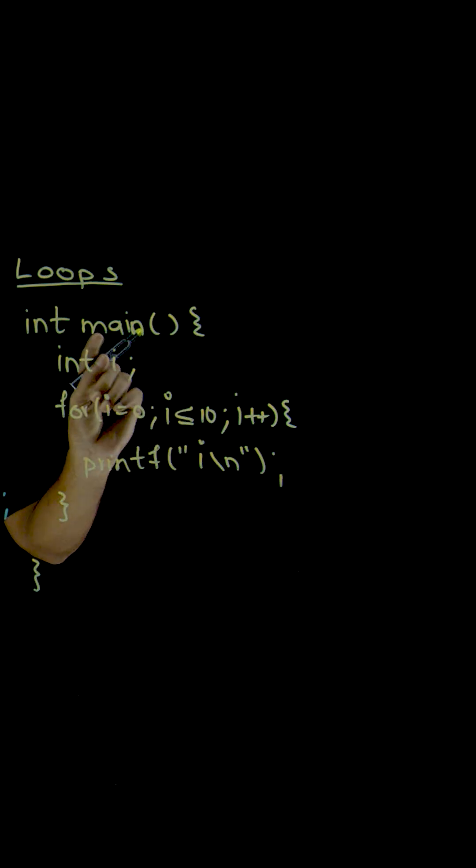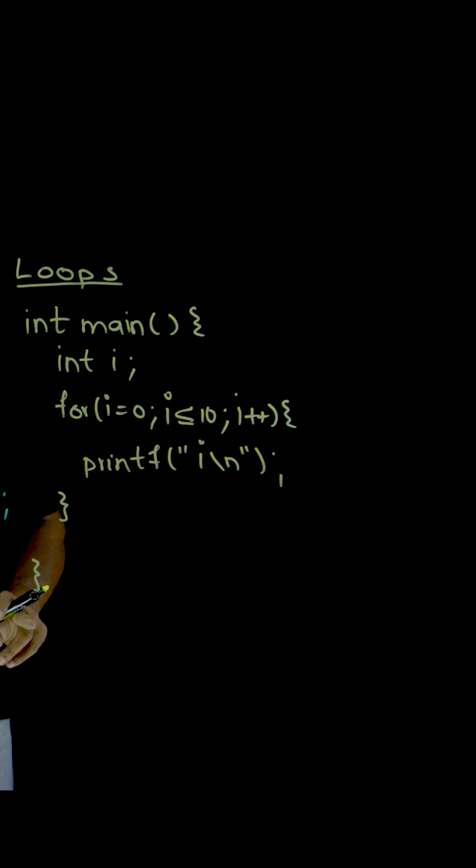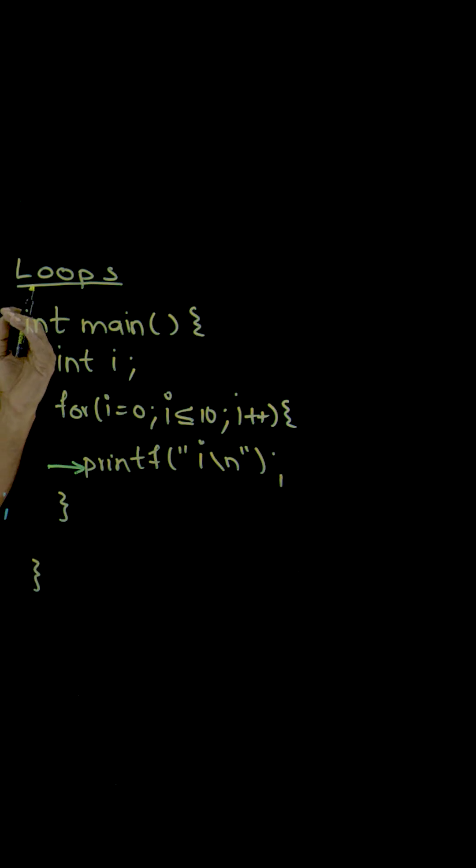It is going to end till 10. Now every time we are going to print the value of i. This line of code will get executed more than once. All you need to understand is the way the change in the behavior of program execution.